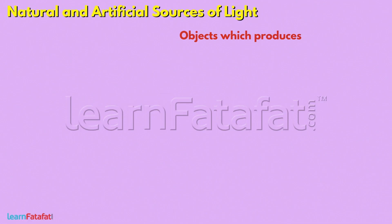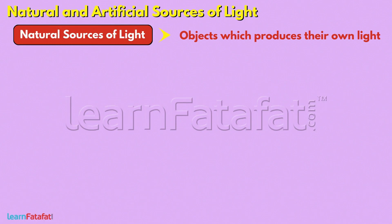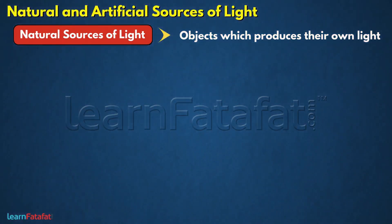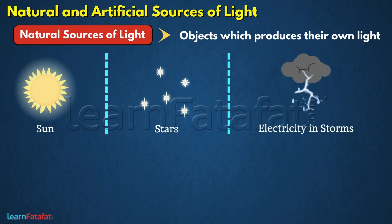The natural objects which produce their own light are called natural sources of light. These are mainly natural things such as sun, star, and electricity in storms.